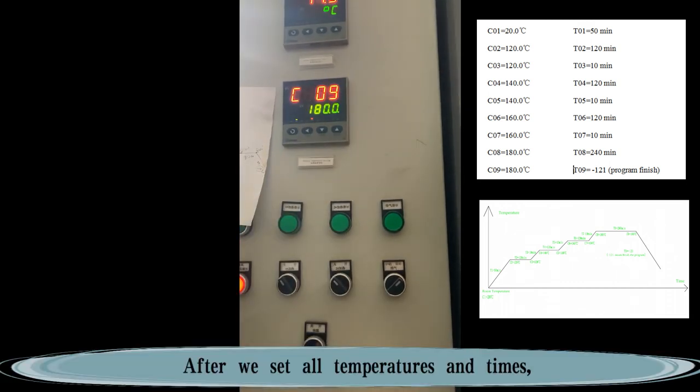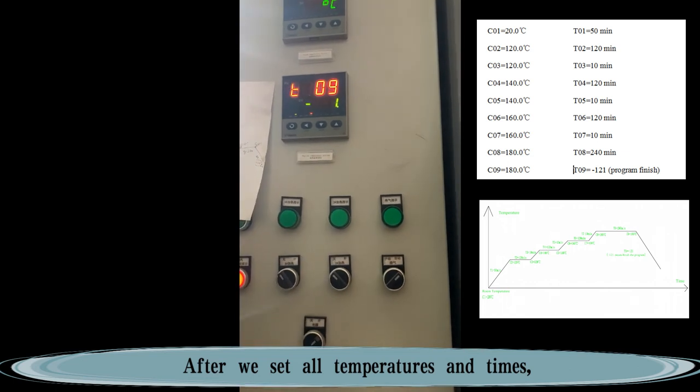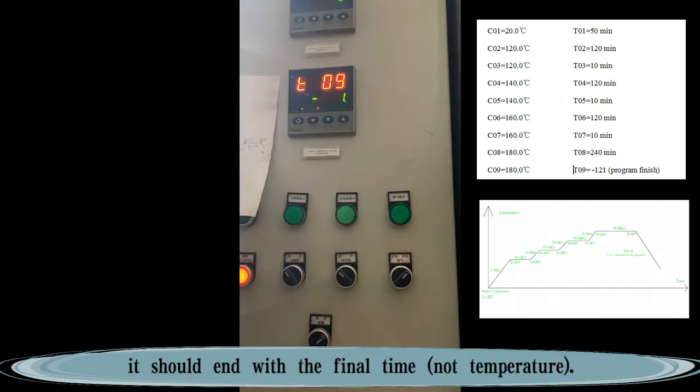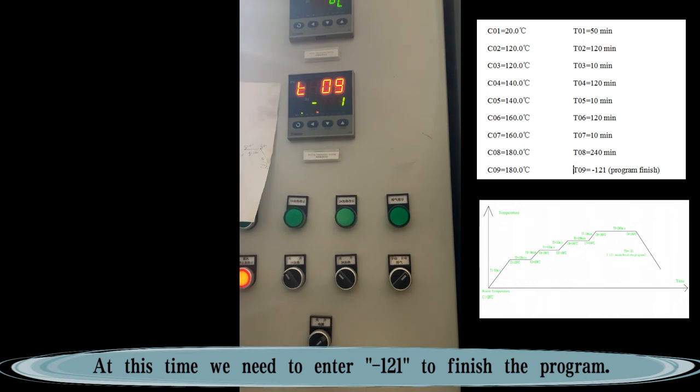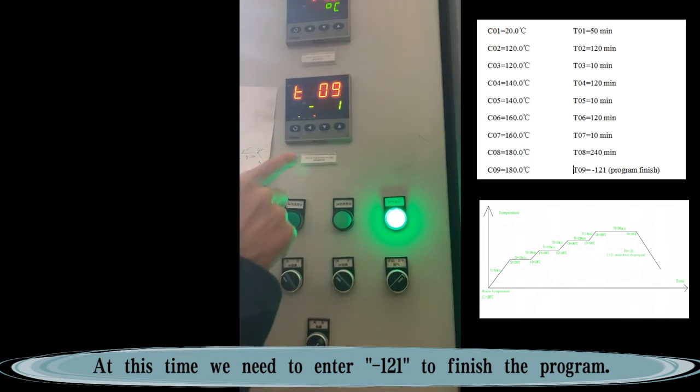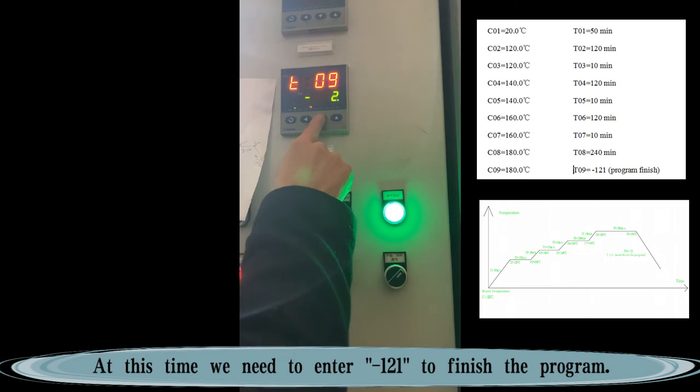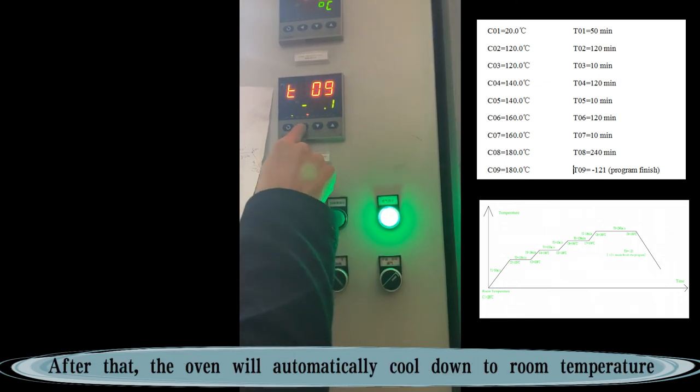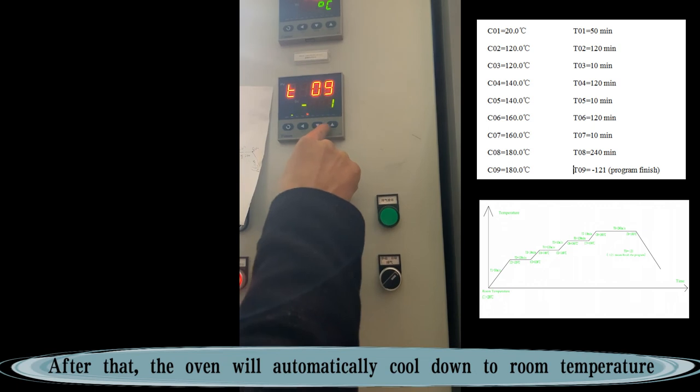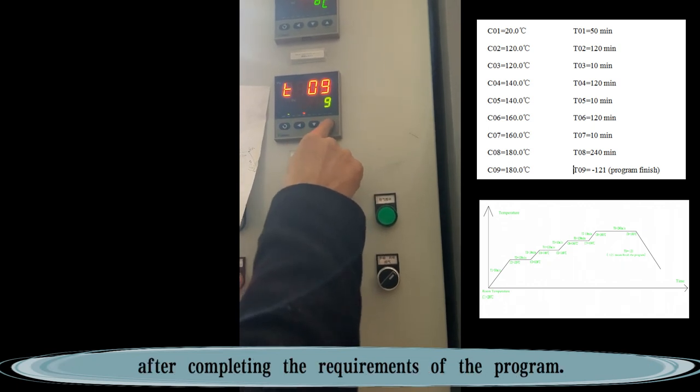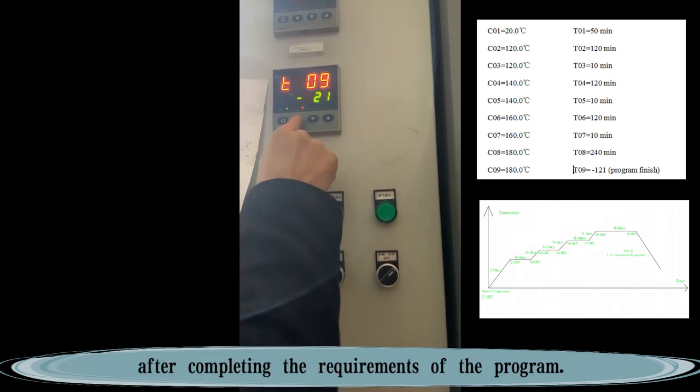After we set all temperatures and times, it should end with the final temperature. At this time, we need to enter minus 121 to finish the program. After that, the oven will automatically cool down to room temperature after completing the requirements of the program.